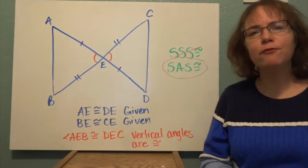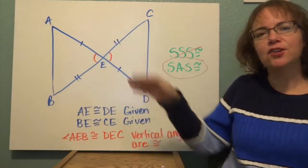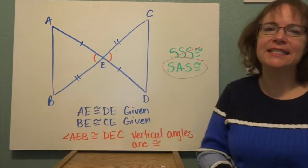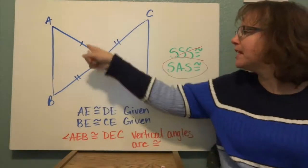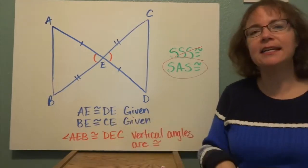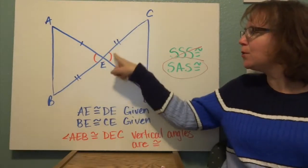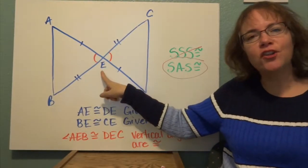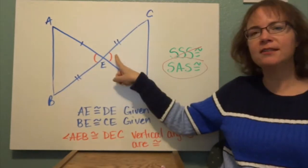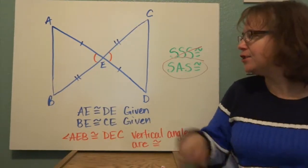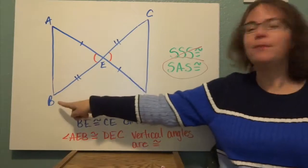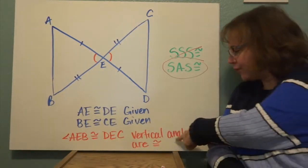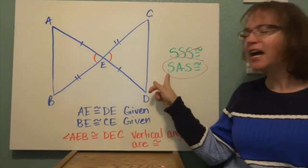Notice I have all of that information in mind before I even start my proof. I know segment AE is congruent to DE because it was given in my diagram — those little hash marks mean those segments are congruent. I also know segment BE is congruent to segment CE, which was also given in my diagram. The only new piece of information is the angle here. I have to use the three-point angle naming convention where the vertex is in the center, so angle AEB is congruent to angle DEC — not because it was given, but because vertical angles are congruent. So now I have all three pieces of information I need to prove this.